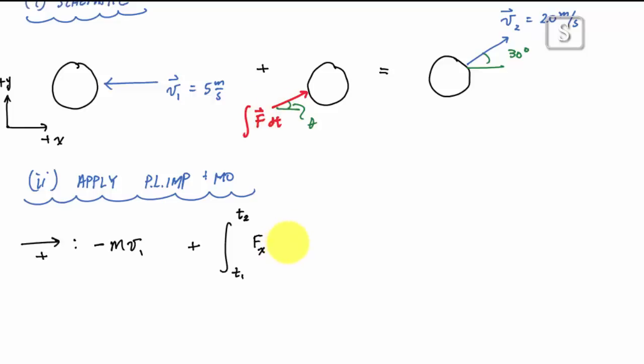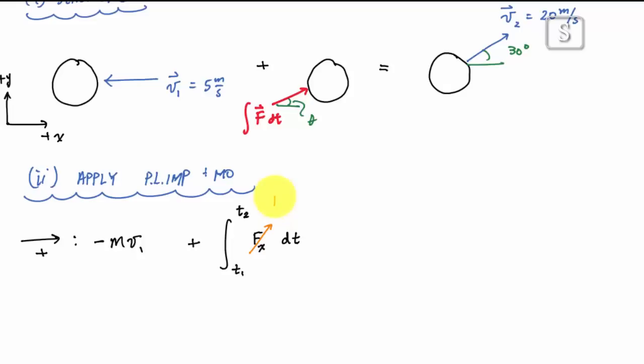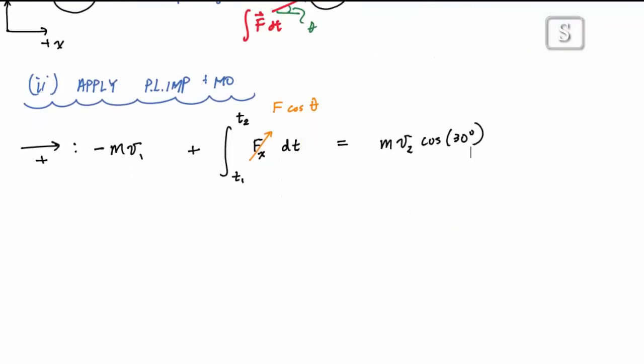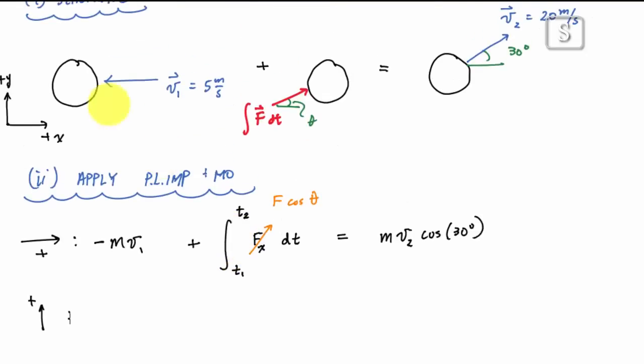The horizontal component of this force would be the x component of this force here, and that would be Fx dt. Really, Fx is just F cosine of theta. This is equal to my horizontal component of momentum at stage two, which would be mv2 cosine of 30 degrees, and it's positive because my horizontal component is going to the right.